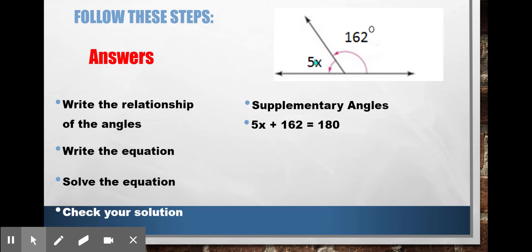So my equation is going to be 5x, which is the measurement of the acute angle, plus 162 degrees, that's the measurement of the obtuse angle. Those two added together equals 180.